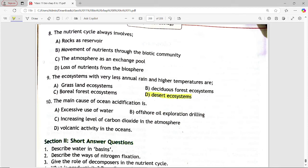Next is the main cause of ocean acidification is, options are excessive use of water, offshore oil exploration drilling, increasing level of carbon dioxide in atmosphere, volcanic activity in oceans. Answer is option c, increasing level of carbon dioxide in atmosphere.